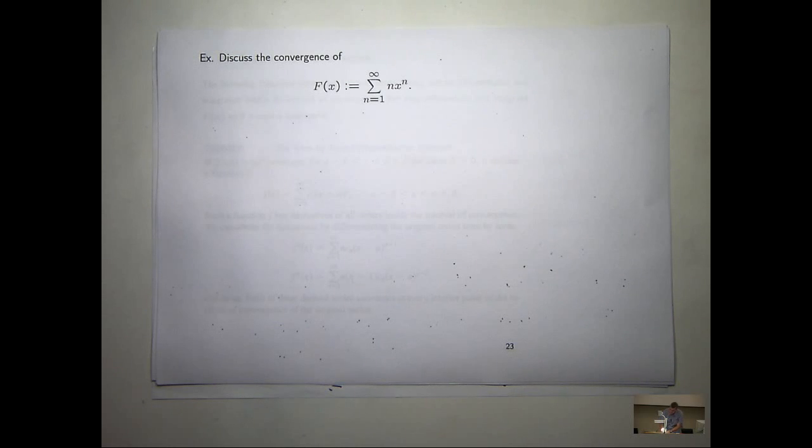Hopefully you should be getting into a bit of a groove now. Apply the ratio test, find some sort of interval, look at the radius of convergence, then test the endpoints. That's it. That's as simple as I can make it. Okay? Ratio test, form some interval, test the endpoints. That's it.